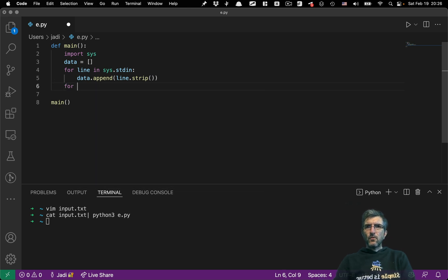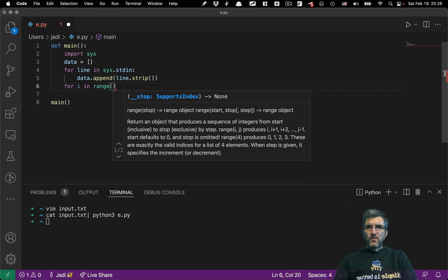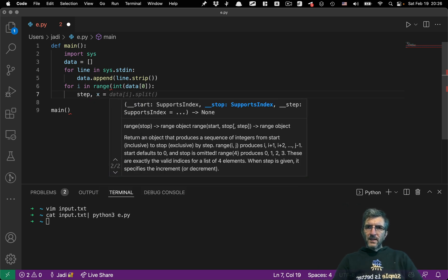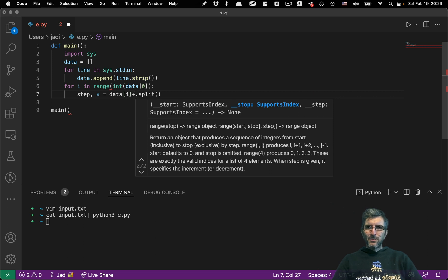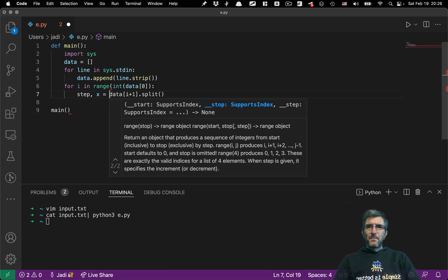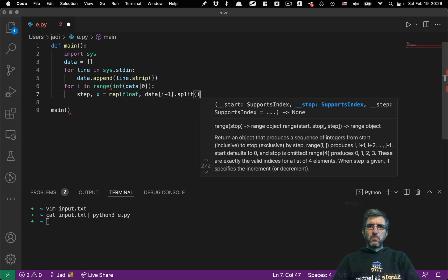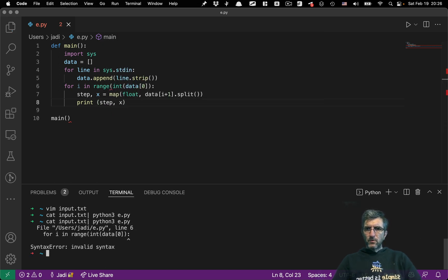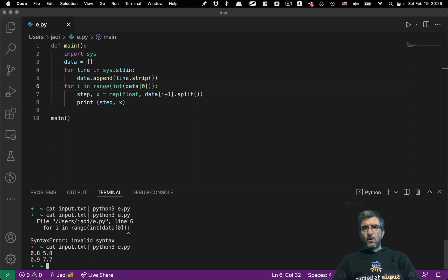So I will say for i in range of data[0] int. Repeat this many times. What should we repeat? And I will say step and x is data i+1 split, and I map this to float to make both numbers as float numbers. And I will say print step and x to make sure that I'm reading numbers correctly. I'm reading numbers correctly.